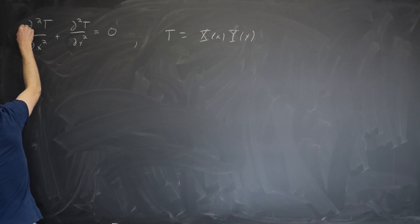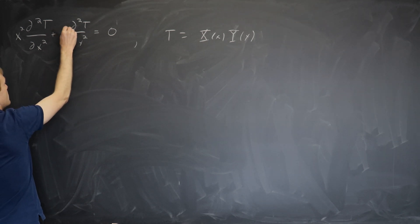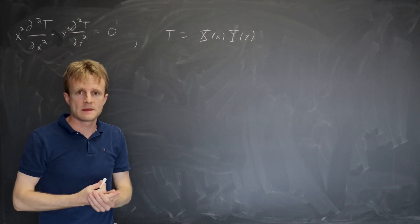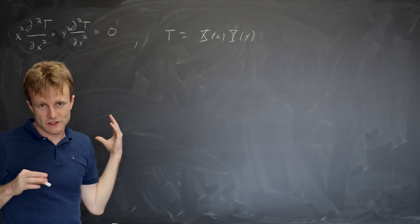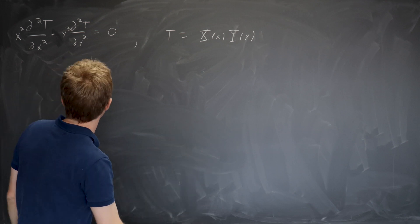So suppose instead of that, we ran into the equation x squared second derivative with respect to x, plus y cubed, second derivative with respect to y. Well, to find out whether separation of variables works, you just try it. There's nothing more to it than that.